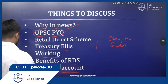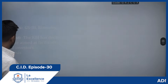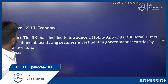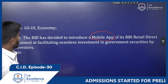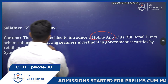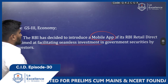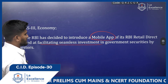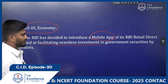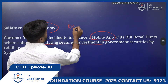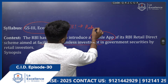The recent news is that the RBI has launched a mobile app for its Retail Direct Scheme, aimed at facilitating seamless investment in government securities by retail investors. In the syllabus this falls under GS3 Economy, and it is very important because every year you will see questions related to RBI in Prelims.